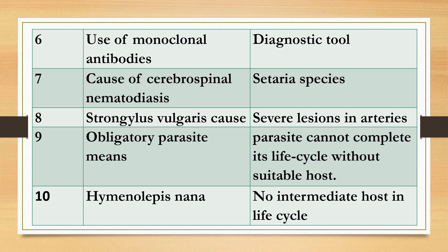Number eight: Strongylus vulgaris causes — answer: severe lesion in arteries. Number nine: Obligatory parasite means — answer: a parasite that cannot complete its life cycle without a suitable host; if a host is not available, the parasite will die. Number ten: Hymenolepis nana — does it require an intermediate host? Answer: no intermediate host in its life cycle.